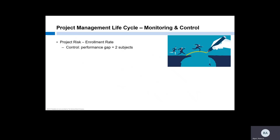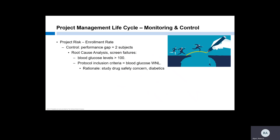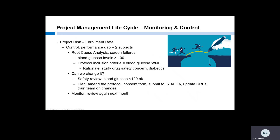As part of our control process, the data tells us that we have a performance gap of two subjects in the first month. Why? Only one subject having withdrawn consent isn't indicative of a trend yet — that's something to watch, but let's not worry about that now. Let's do a root cause analysis and pull the data to identify what caused each of these two subjects to screen fail. In reviewing the source data, we see that both subjects had blood glucose levels over 100. Our protocol eligibility criteria says that subjects have to have a blood glucose within normal limits at screening. Why is the protocol written that way? According to the PI, there is an increased risk with the study drug in diabetics, so she set the inclusion criteria to be very conservative out of concern for subject safety. There's our root cause: the inclusion criteria is restrictive for patient safety. Now that we have our root cause, we need to see if there's anything we can do to change it. There may not be, and we may need to revise our enrollment rate expectations.